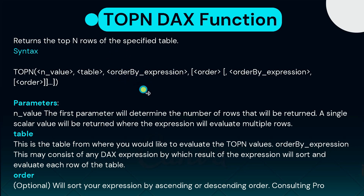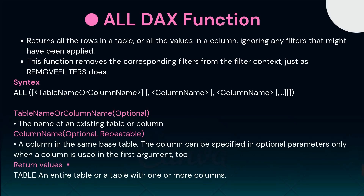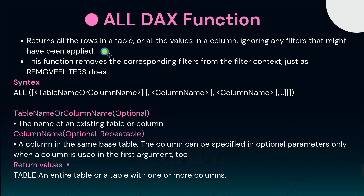The next DAX function is ALL. The ALL DAX function is used to return all the rows in a table or all the values in a column by ignoring any filters that might have been applied to that table or column. In short, ALL is used to remove all filters from a table or a column.